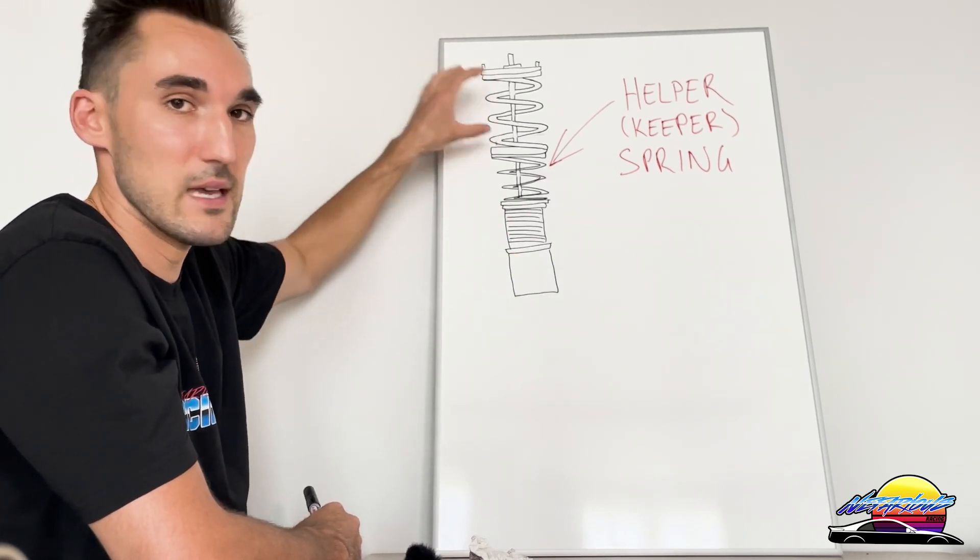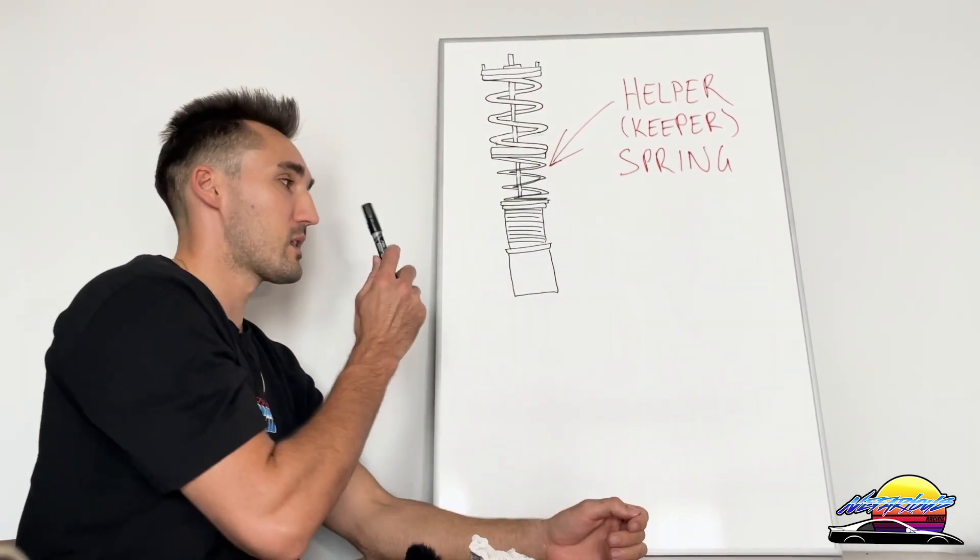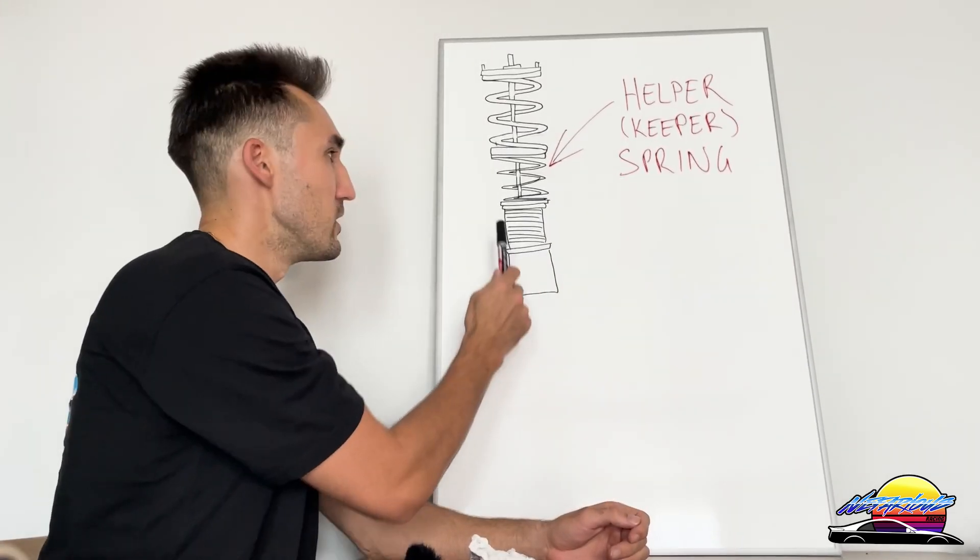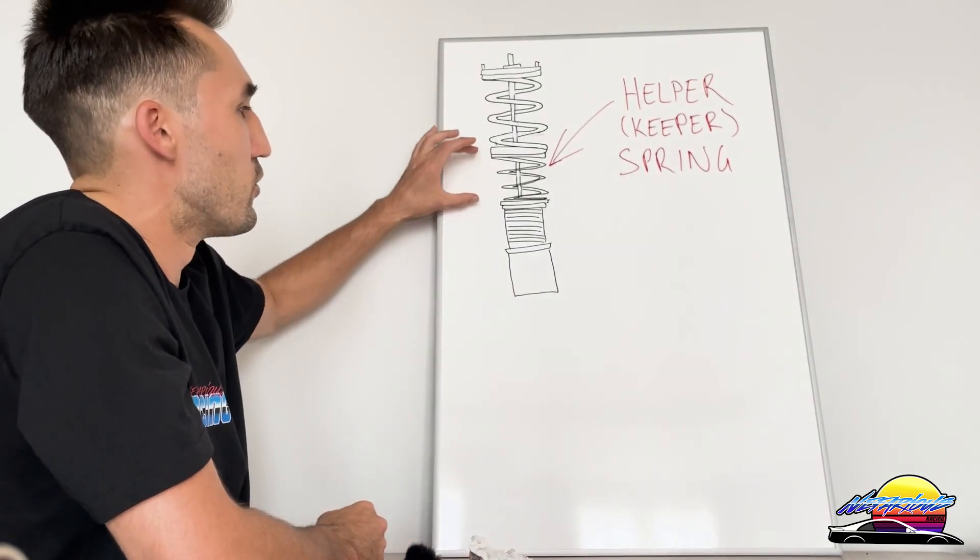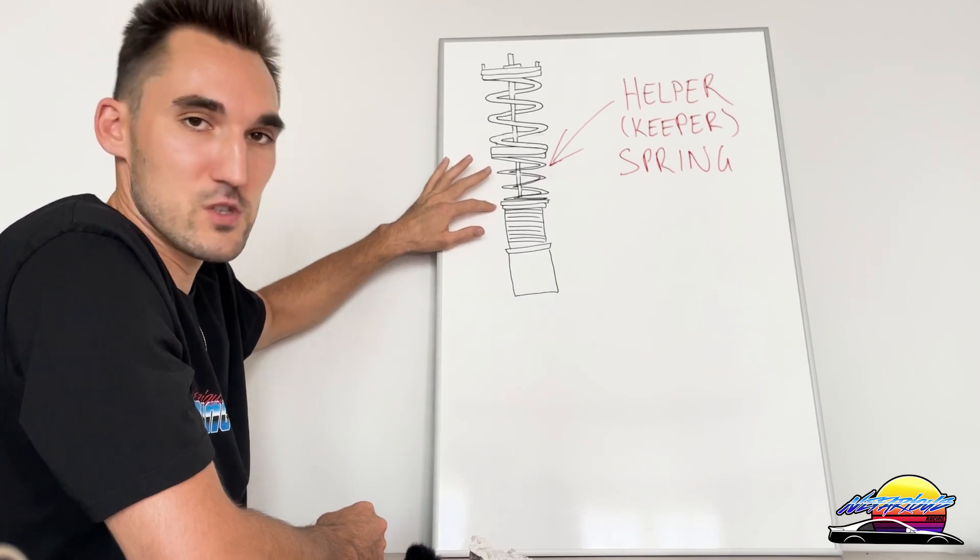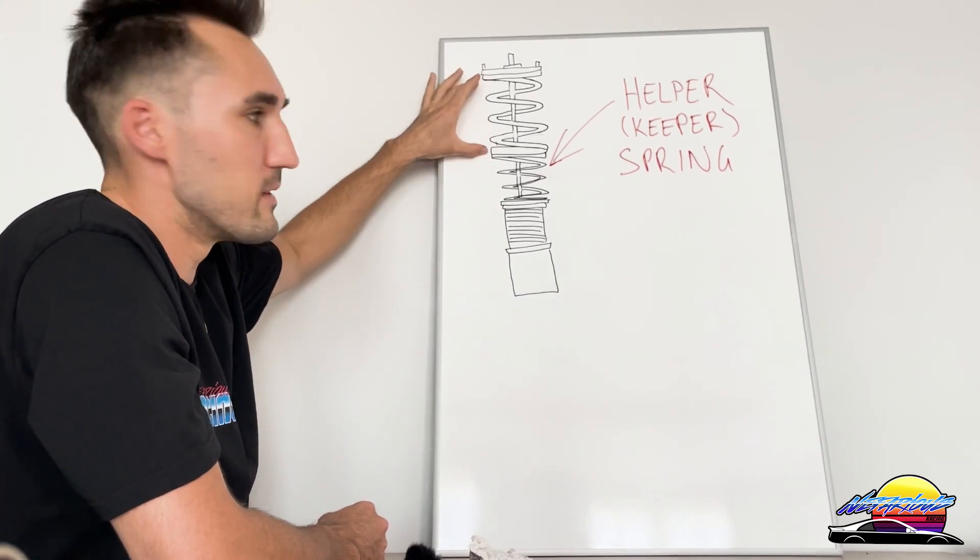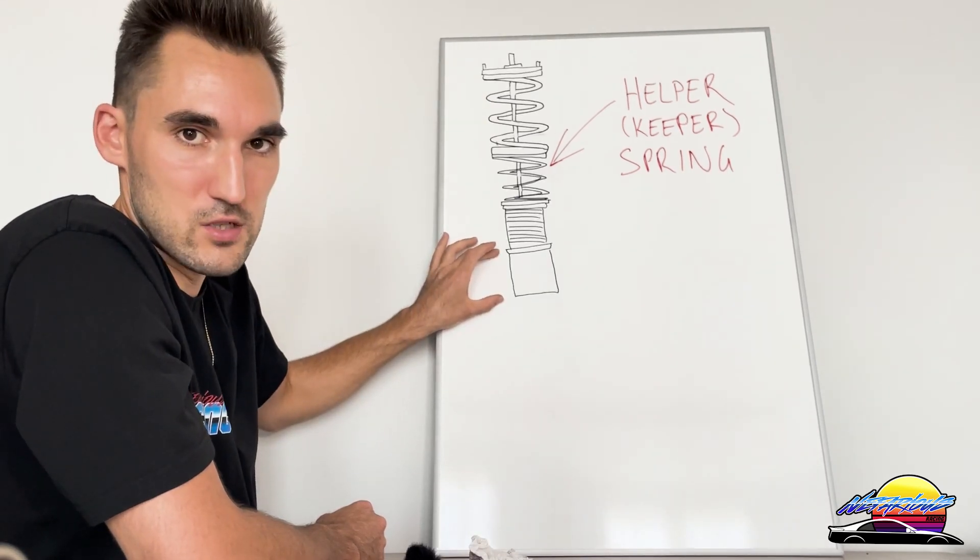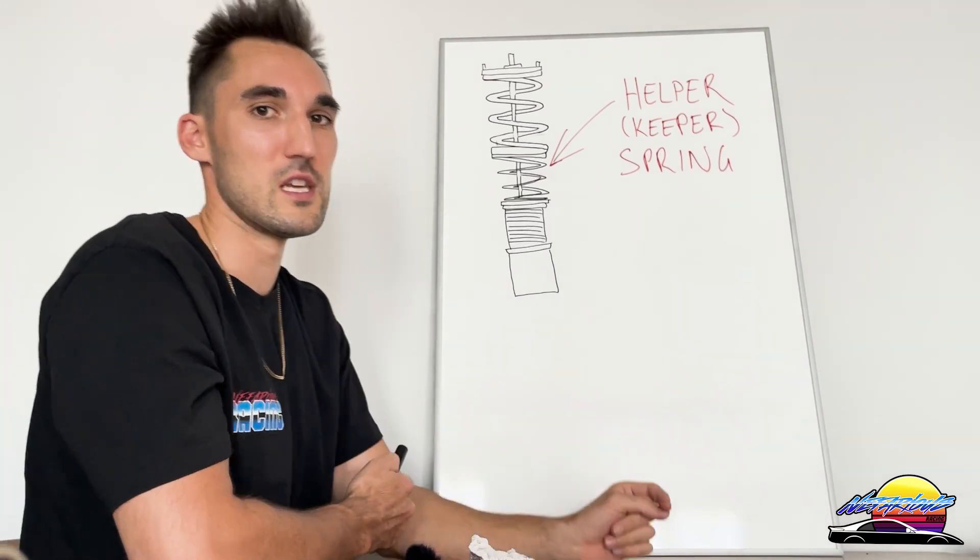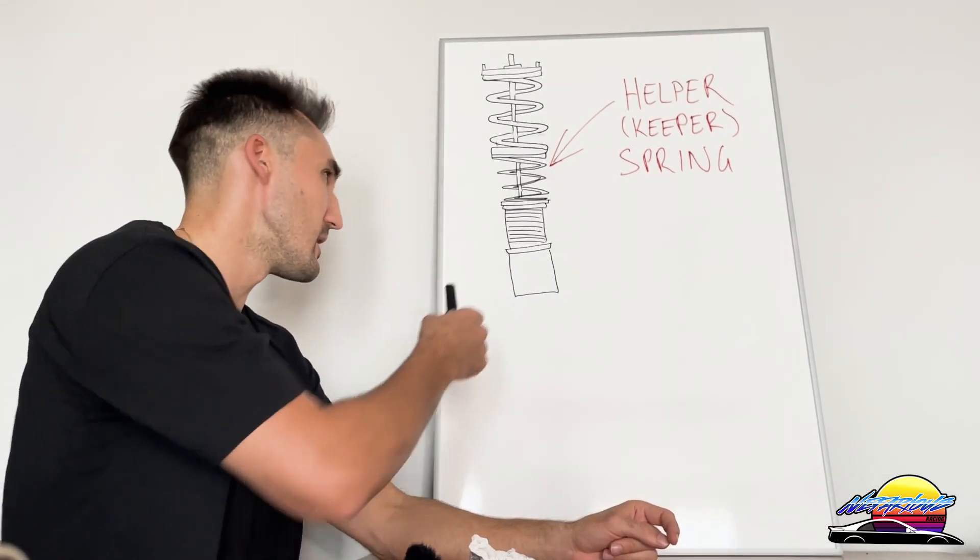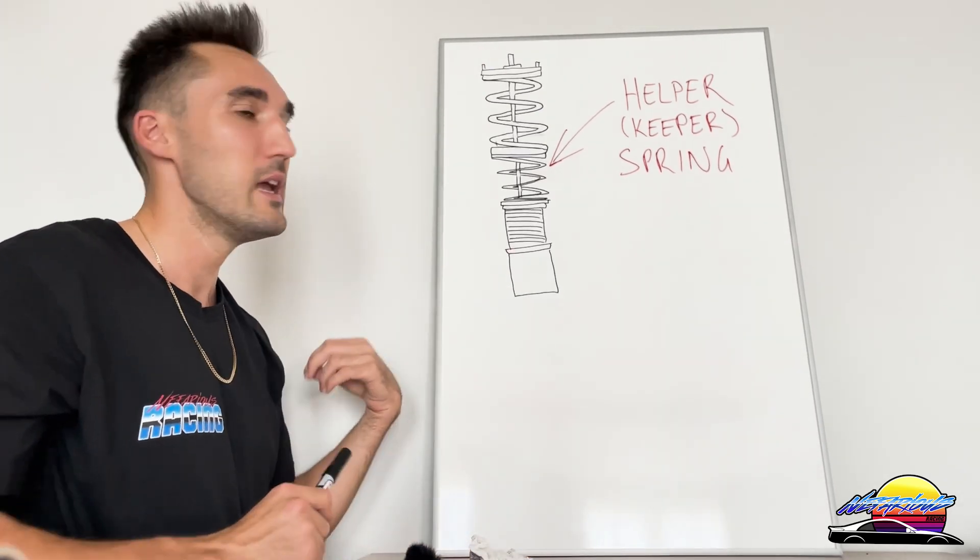Now with kits that have shock body height adjustment, sometimes you see helper springs but a lot of times you don't. The reason why is because you don't really mess with the actual spring perch for height. You usually set the preload on the main spring, leave it there, and then adjust the height by the bottom. That's usually how that works, so that's why they don't usually have them. That's why you won't see them on most coilovers. For example, BC Racing kits don't have a helper spring for this reason because they don't actually need it.